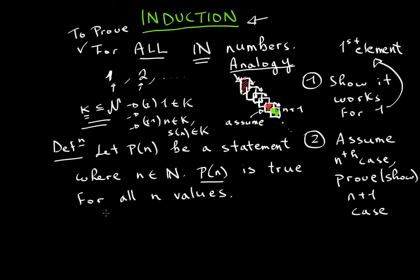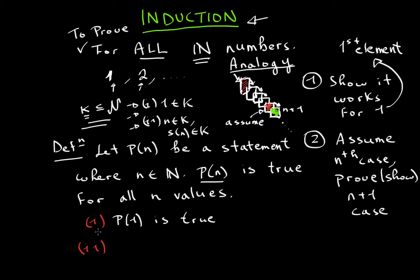The first condition is to show that P of 1 — the case 1 — is true. Number two, you have to show that assuming P of n works for some n, your goal is to show that P of n plus 1 is also true. This is called the induction hypothesis.